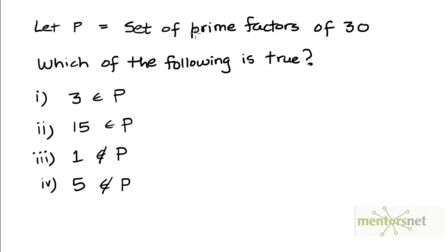So how do we solve this problem? Well, we first have to identify what the prime factors of 30 are. 30 can be written as 2 times 3 times 5. So the set of prime factors of 30 are 2, 3, and 5. These are the three elements or members of the set P.